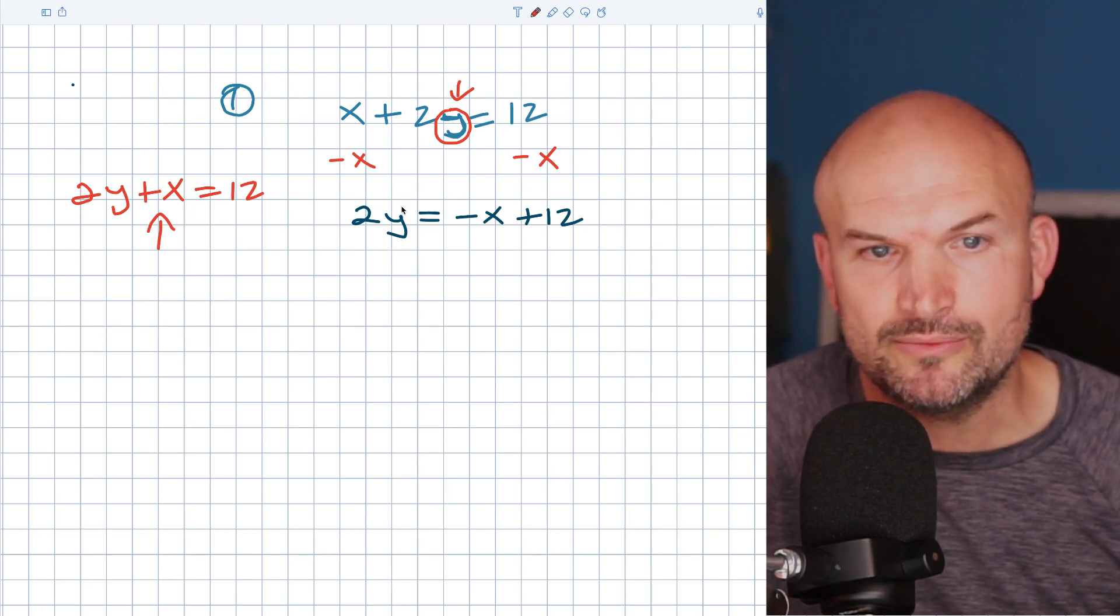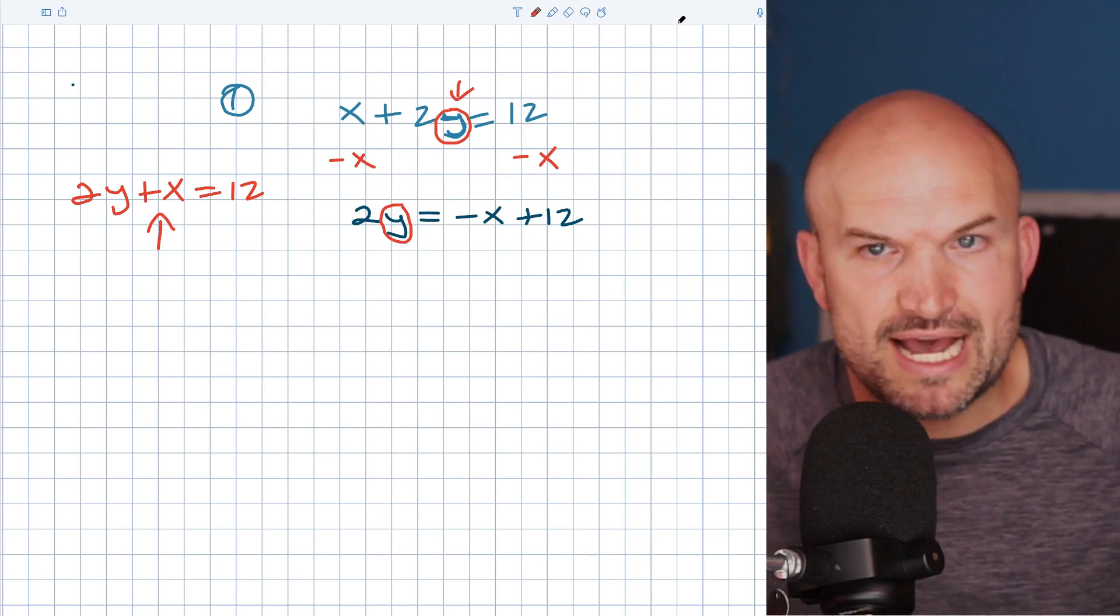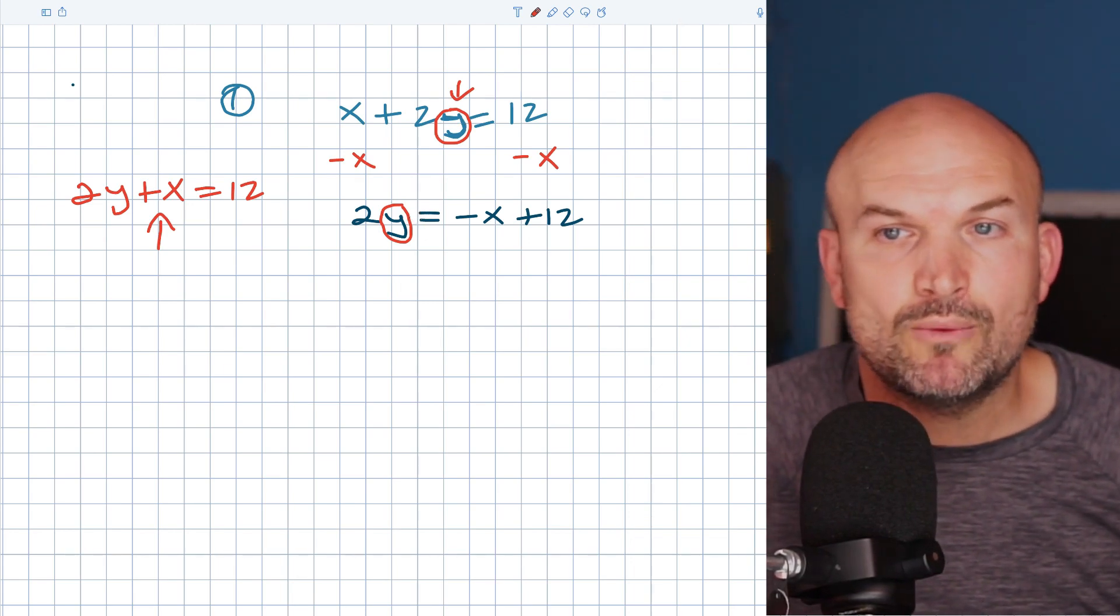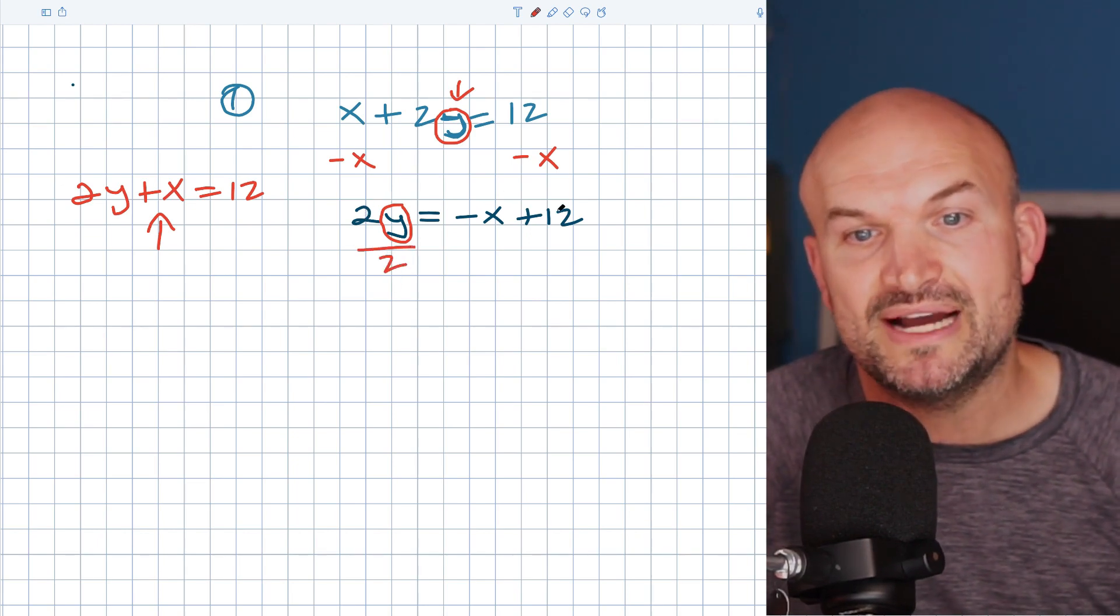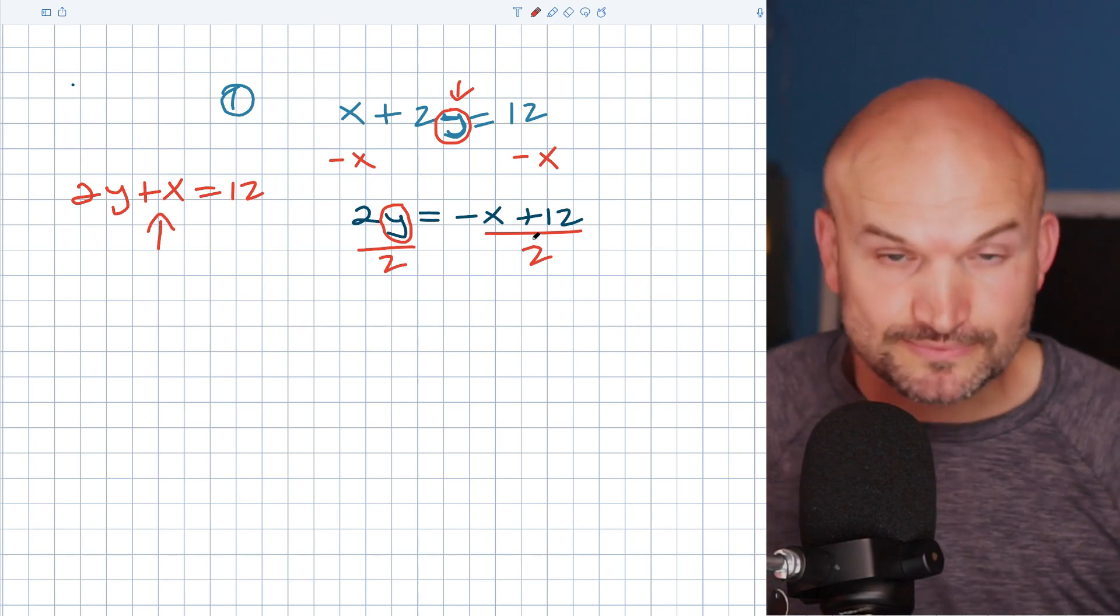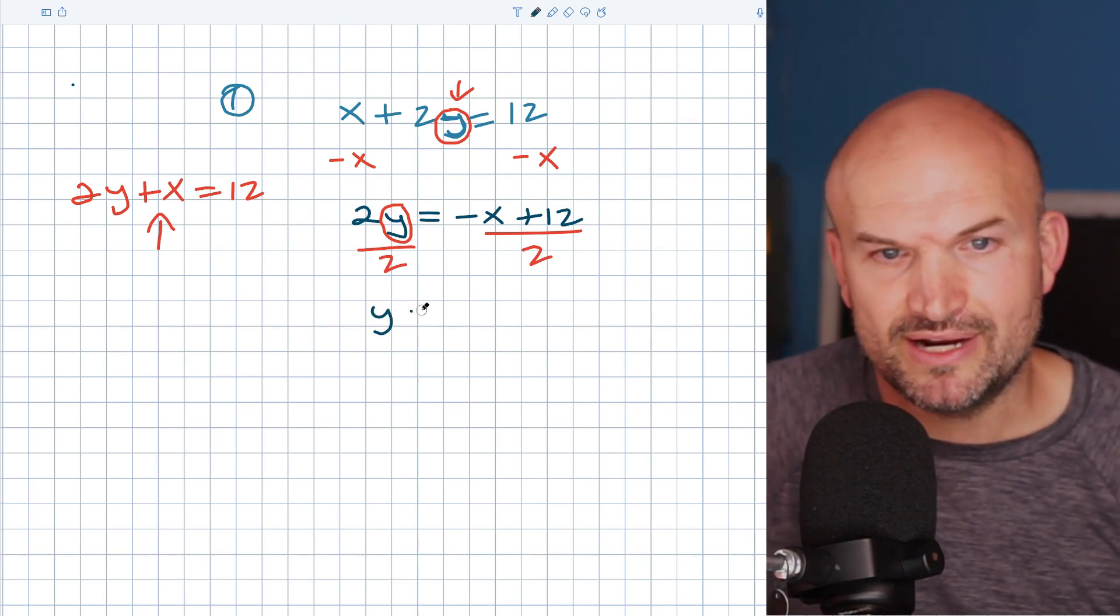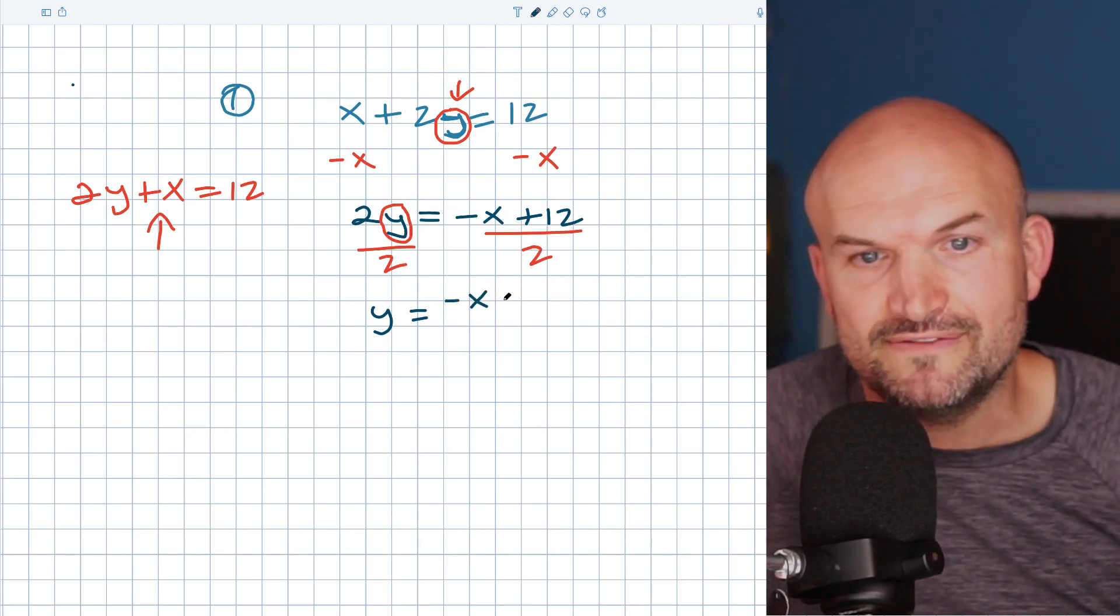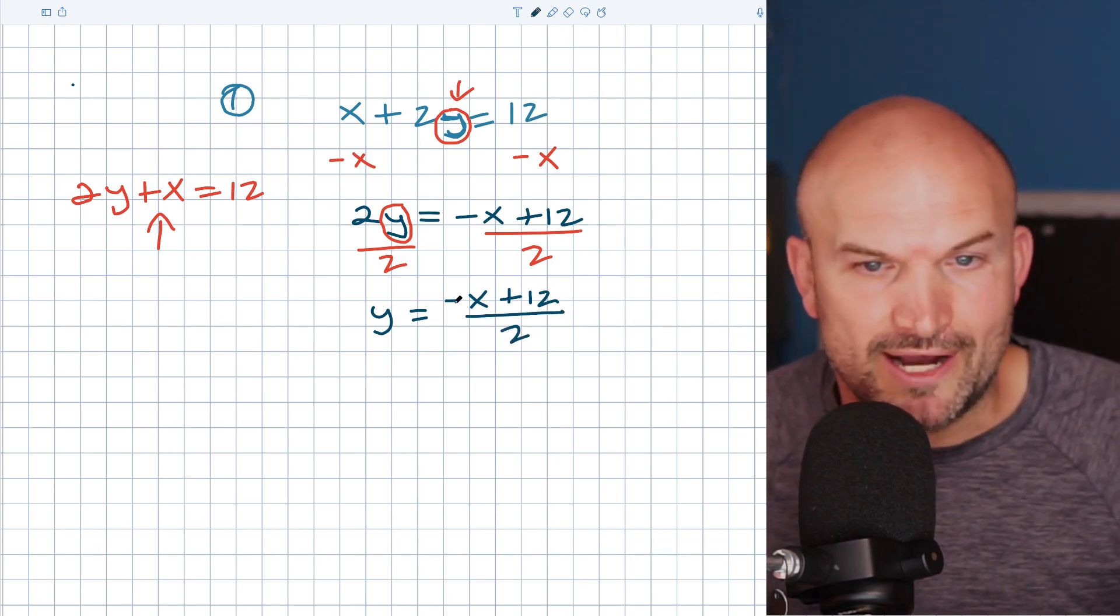Now we're going to go through the same process here. I'm going to circle the y, and now I want to say, what is happening to my y that I need to undo? The two is multiplied by the y. So I need to undo multiplication by dividing. So I'm going to divide by two on both sides. Now, you might say, I got my y. It's all done, right? And make sure the two divides into both of these terms, right? So that's negative x plus 12 divided by two. And that's good. That is correct. You did solve for y.